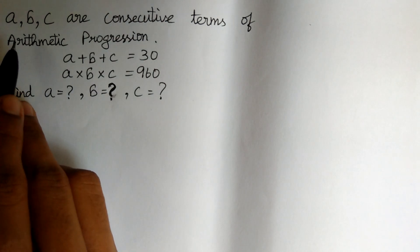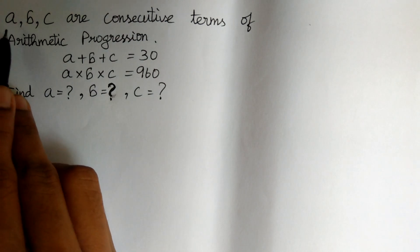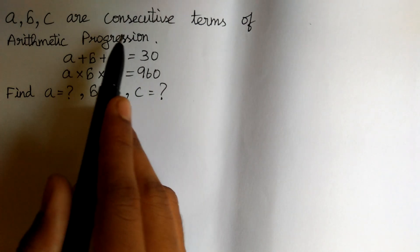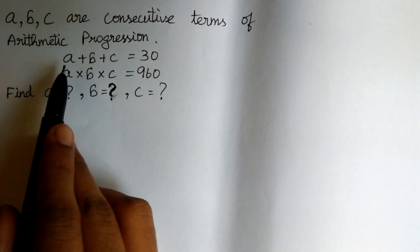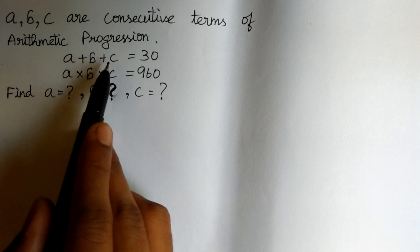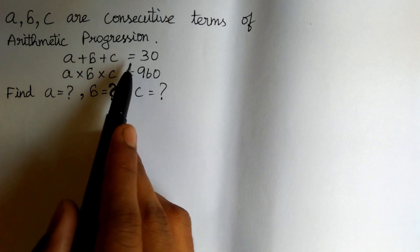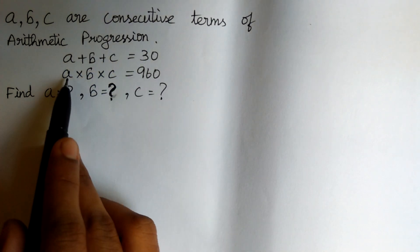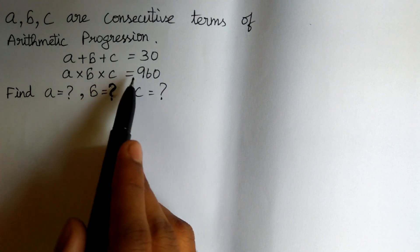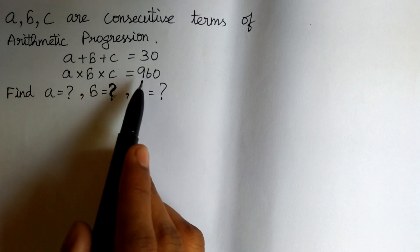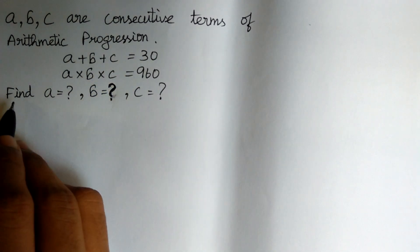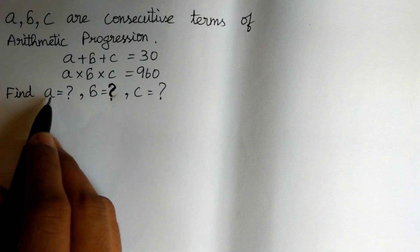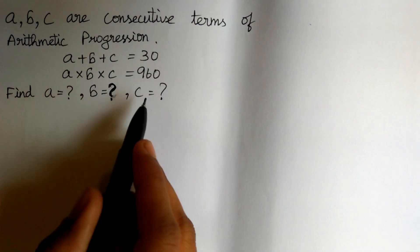The question is: A, B, C are consecutive terms of an arithmetic progression. Given data: A plus B plus C is equal to 30, and A cross B cross C is equal to 960. We need to find the values of A, B, and C.